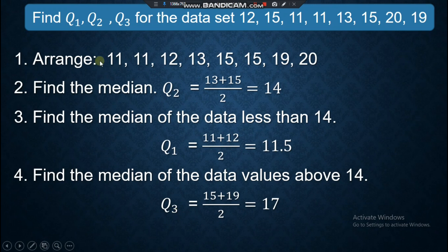The first step again is to arrange. Second step, find Q2. This Q2 is your basis for finding the data that is less than, and that is for Q1. Same, Q2, data that are above or the median above Q2, and that is Q3. Our answer here: Q2 is 14, Q1 is 11.5, Q3 is 17.